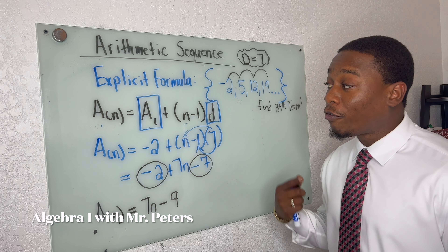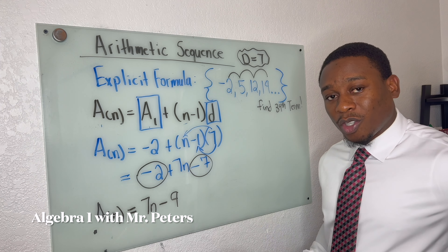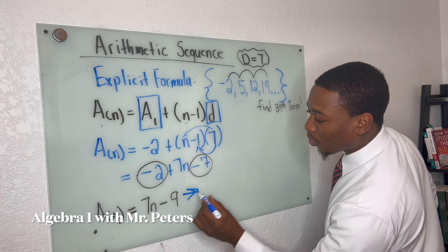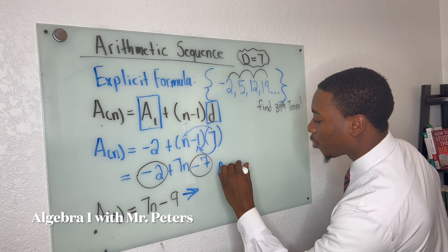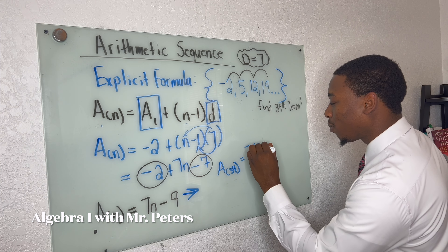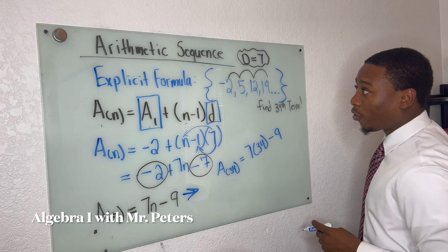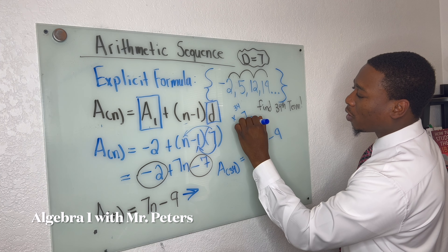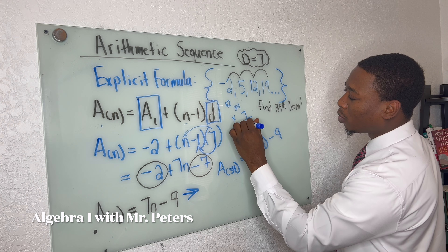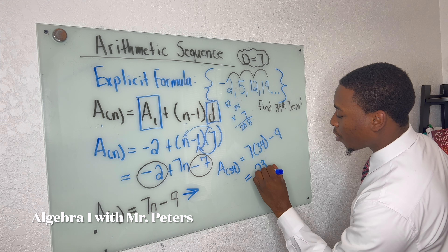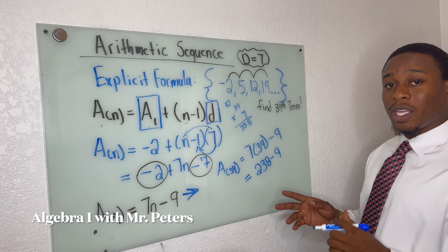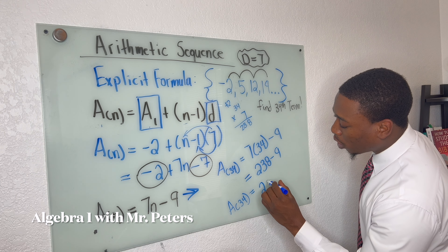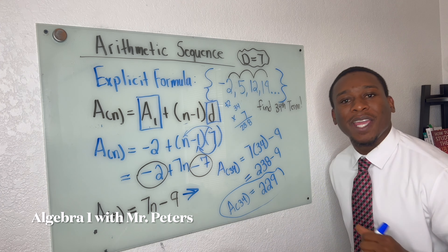Now we have the formula for this sequence, and it's a shortcut to find the 34th term. So a(34) equals seven times 34 minus nine. Seven times 34 is 238, and 238 minus nine gives us 229 — the same exact answer we just had.